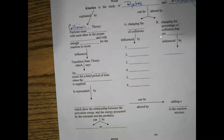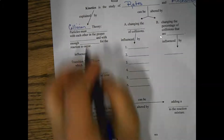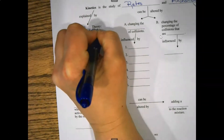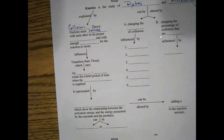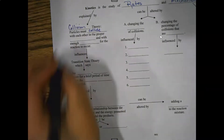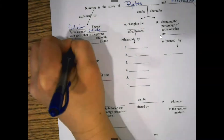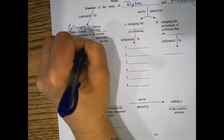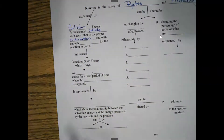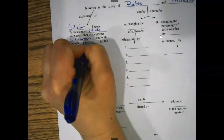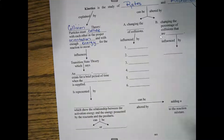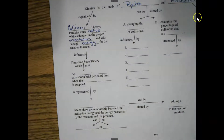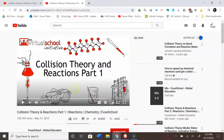The most obvious one that people forget: particles have to collide with each other, and they have to collide in what we refer to as the proper orientation, and with enough energy for the reaction to occur.